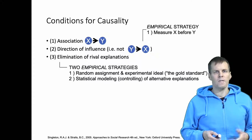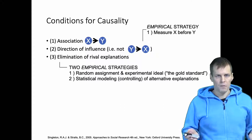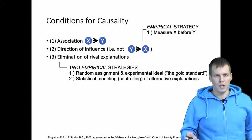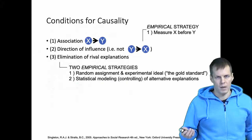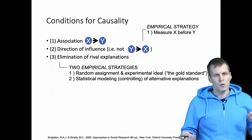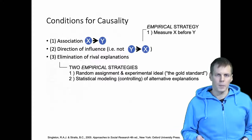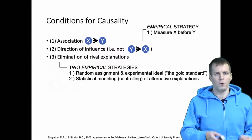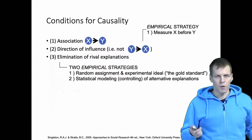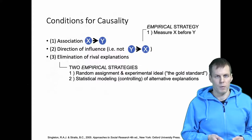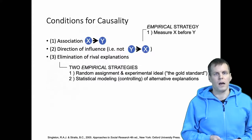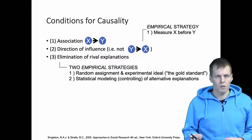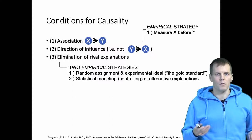This is fairly straightforward to do except for the elimination of rival explanations, because there are some general strategies that can be applied. To demonstrate the direction of influence, we typically measure the cause before the effect, and that in most cases takes care of the problem. To eliminate rival explanations, we have two strategies: randomized experiments and statistical controls.